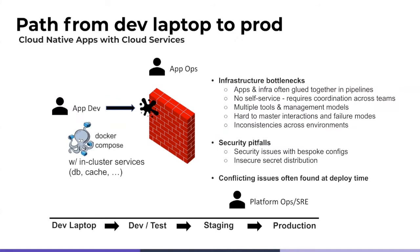Going from dev laptop into production is riddled with hurdles, including infrastructure bottlenecks where you often have multiple tools and management models glued together in imperative pipelines that are hard to master — the interactions and failure modes between them — as well as inconsistencies across your dev, staging, and prod environments. When creating bespoke configs for the first time, security issues can often creep in, and secret distribution when using ticket ops can often be insecure.